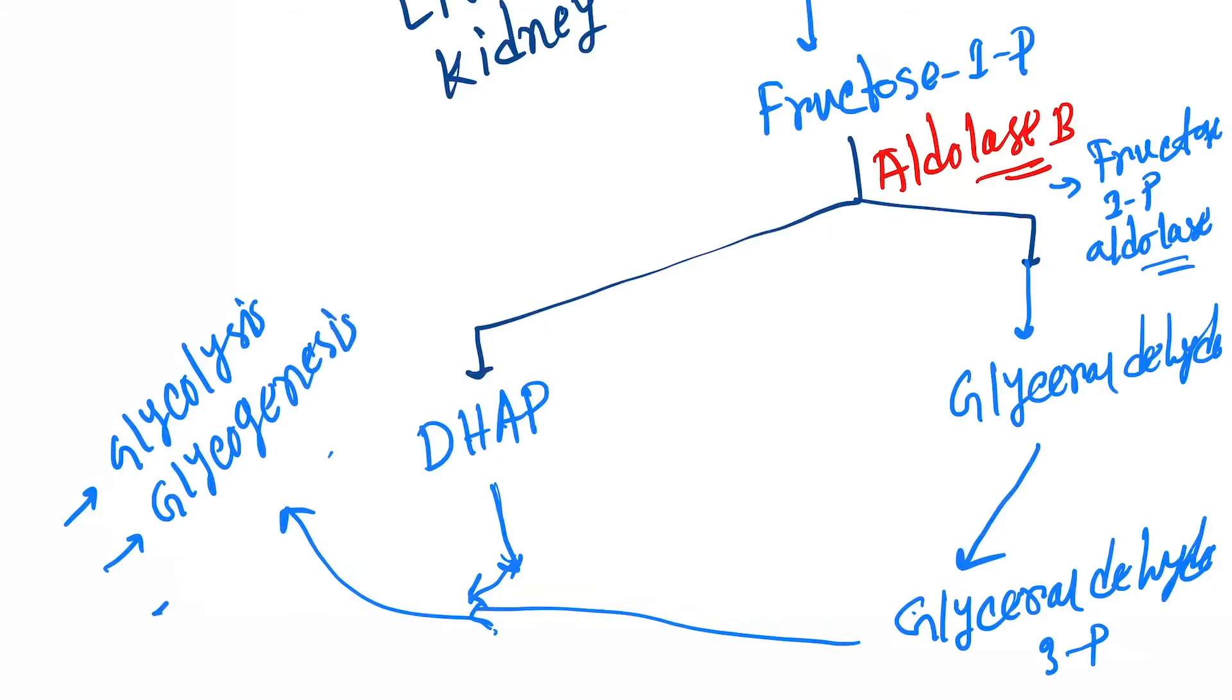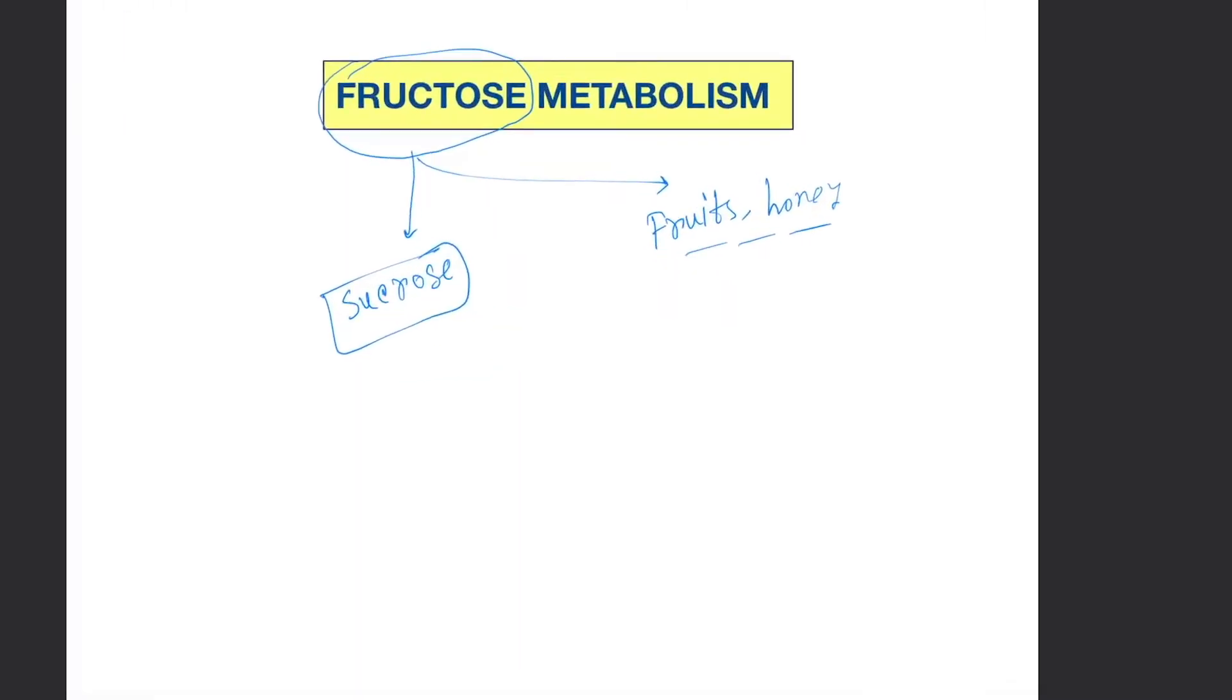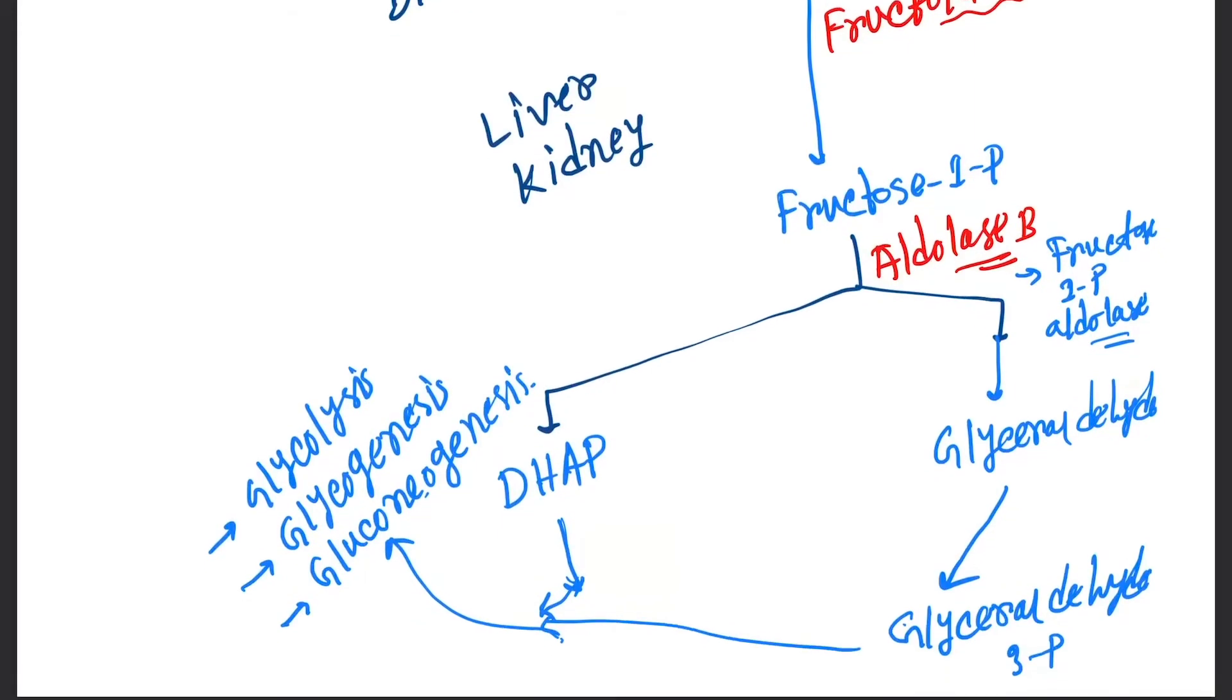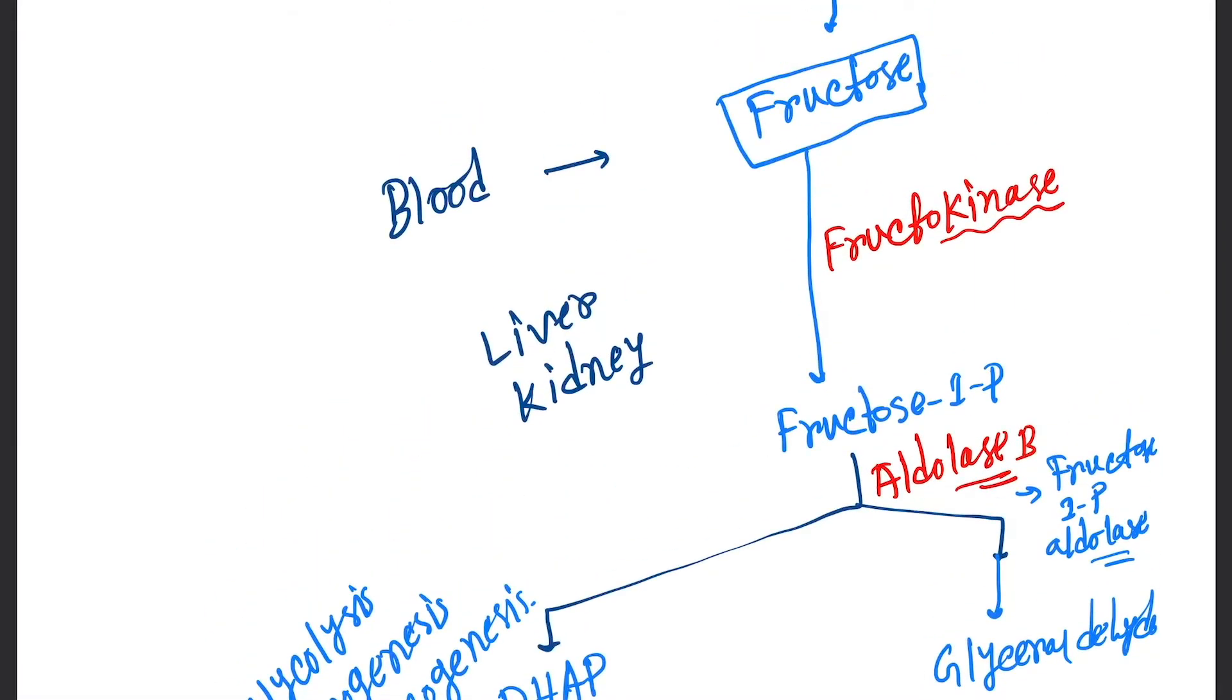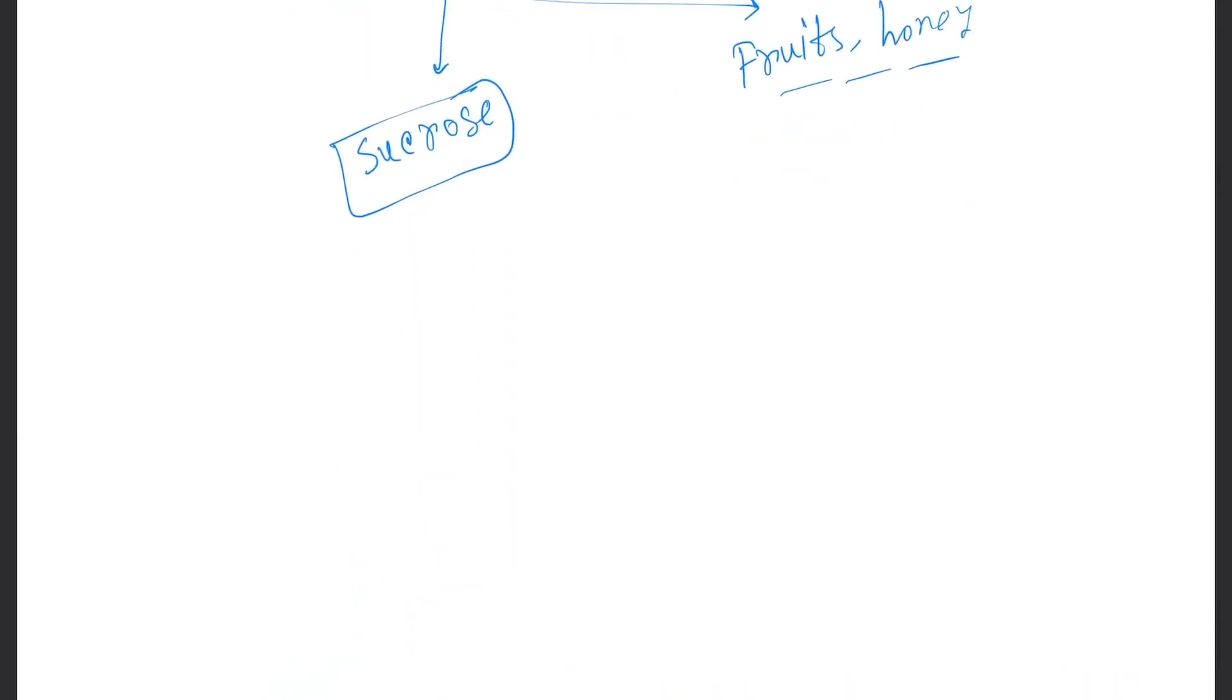So that's the whole metabolic pathway of fructose metabolism. Here one clinical relation is there - that is aldolase B deficiency. If this enzyme deficiency occurs, then some disease or disorder will occur.